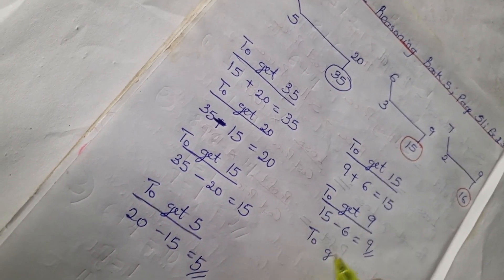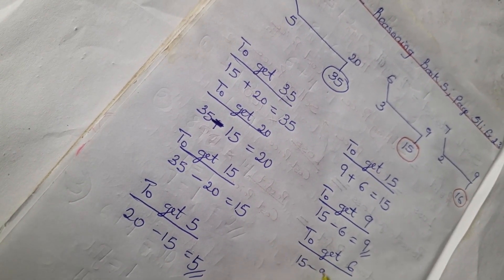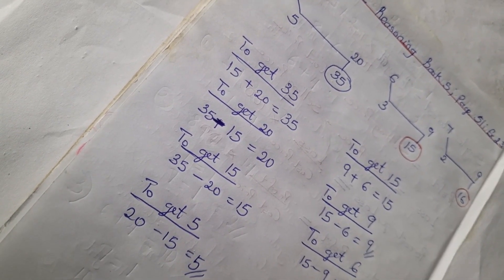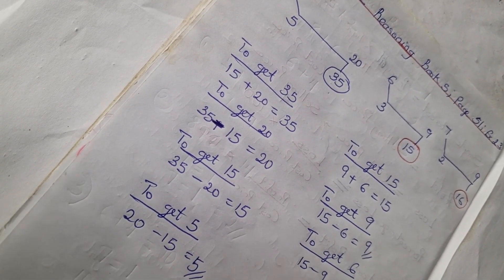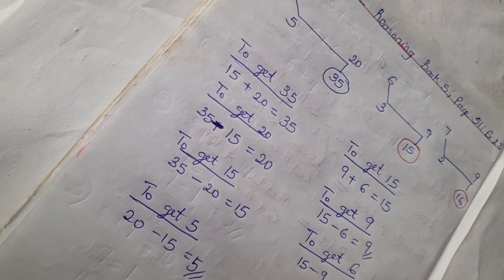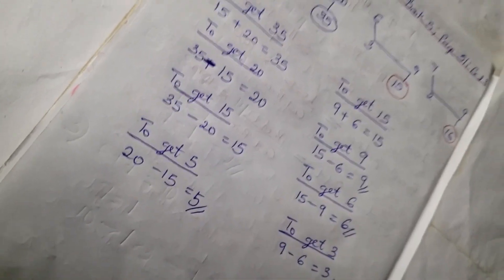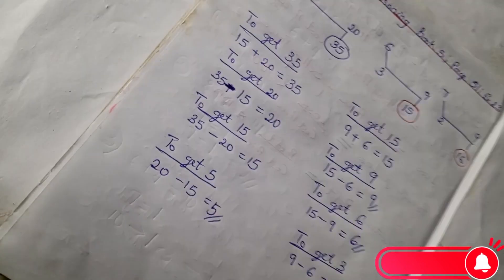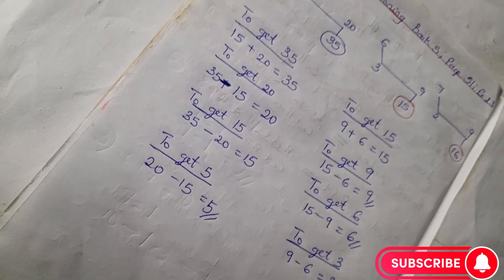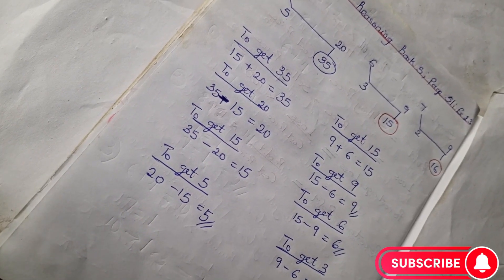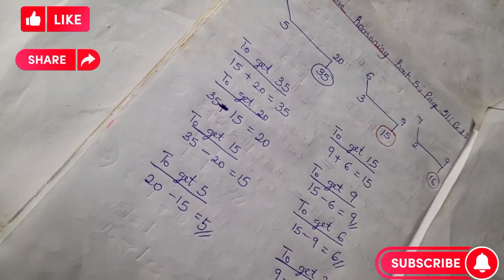To get 6, we have 15 minus 6 is 6. And to get 3, we have 9 minus 6 is 3. Don't forget to subscribe, like, and share this channel for more quantitative and mathematics problems and solutions. Bye!